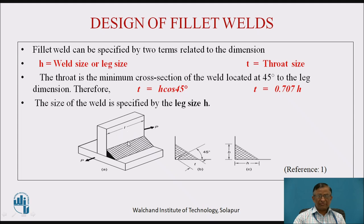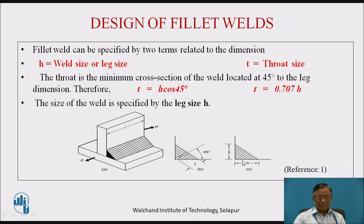Let us consider the example of fillet weld between these two plates, which is a triangular intersection as shown here. This fillet weld has got two dimensions. One is H, called as weld size or leg size, and another is the minimum thickness or cross section, that is T, the throat size. The failure of this joint, if at all it occurs, occurs at the minimum cross sectional area, and that is why it occurs at the throat size. The value of T is H cos 45, and that is why T is equal to 0.707 times H. This is the way the two dimensions of the weld can be specified — either leg size or weld size H, or throat size T.